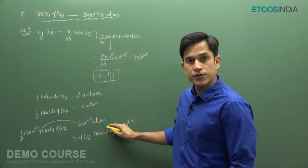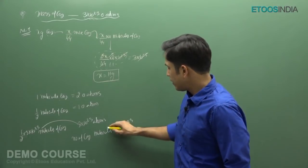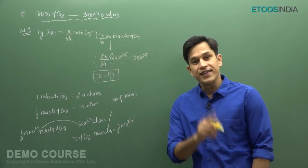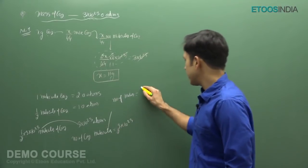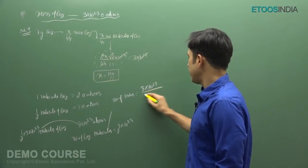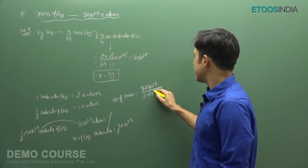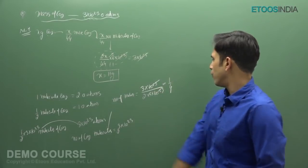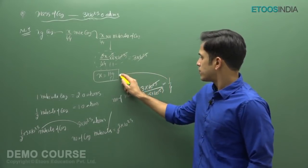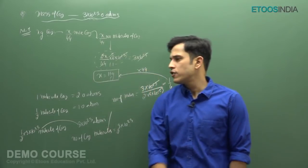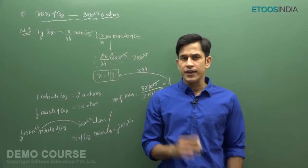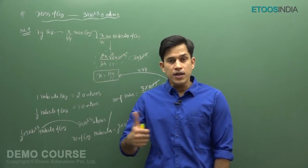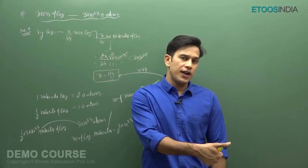From the number of CO2 molecules we calculate moles by dividing by Na. So it equals 3 into 10 to the power 23 upon 2 into 6 into 10 to the power 23. The 10 to the power 23 cancels, giving number of moles equal to 1 by 4. To get mass from moles, multiply by the molar mass, and the answer is 11 grams. These are two simple conventional approaches to calculate mass from a given number of atoms or molecules.